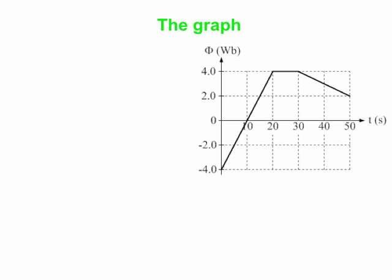Here's a graph of magnetic flux as a function of time. The flux starts off at minus 4 Webers — that's minus 4 Tesla meter squared — and then it gradually increases from minus 4 to 0, and then from 0 up to plus 4. That whole process takes 20 seconds. Then for the next 10 seconds, from t equals 20 to t equals 30, the flux is constant at positive 4 Webers. And then between 30 and 50 seconds, you see a decrease from 4 Webers to 2 Webers.